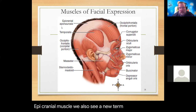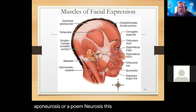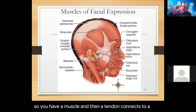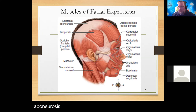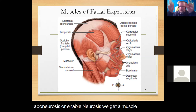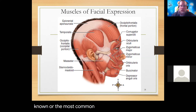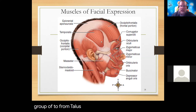Together they call this the epicranius or epicranial muscle. We also see a new term: aponeurosis - a tendinous sheath that brings two separate muscles together. As opposed to a muscle connecting to a bone via a tendon, with an aponeurosis we get two separate muscles connected by a tendinous sheath. This is the epicranius, which is actually a group of two: frontalis and occipitalis. We also see the temporalis muscle on the temporal bone.